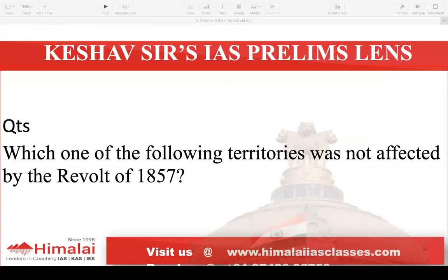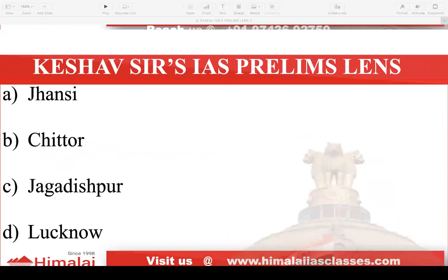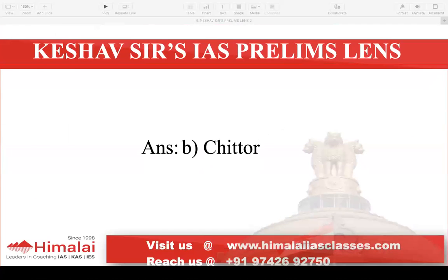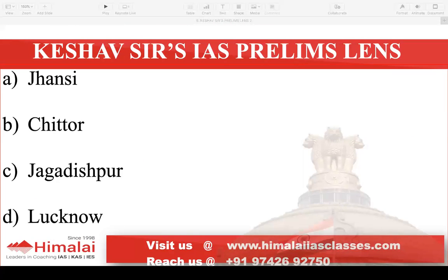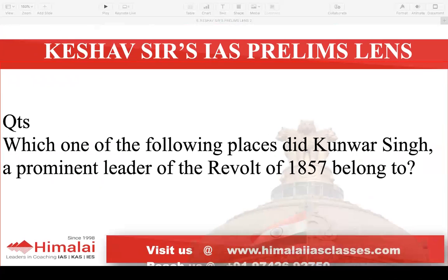Next question: Which one of the following territories was not affected by the Revolt of 1857? A. Jhansi, B. Chittor, C. Jagdishpur, D. Lucknow. Chittor is the place that was not affected — answer is B. It's in the Rajasthan region. All others come in the UP and West Bengal region, which were the epicenters of the 1857 revolt.